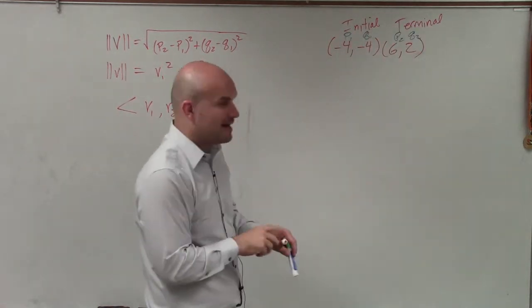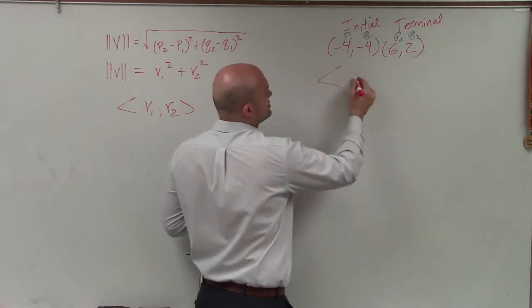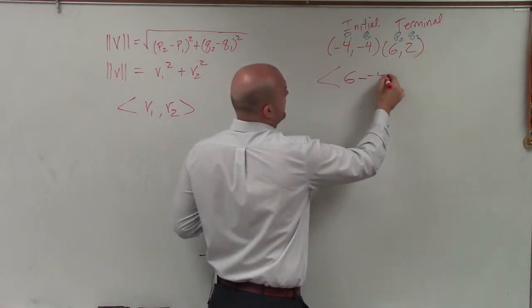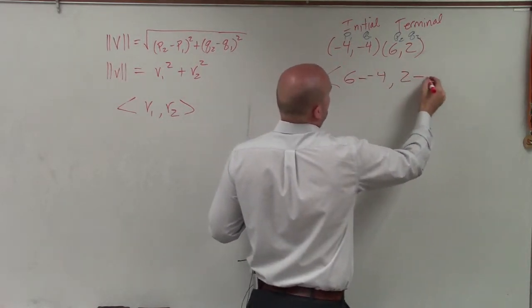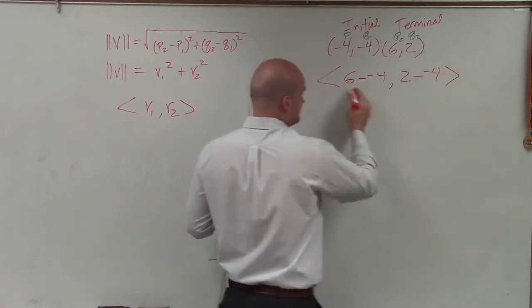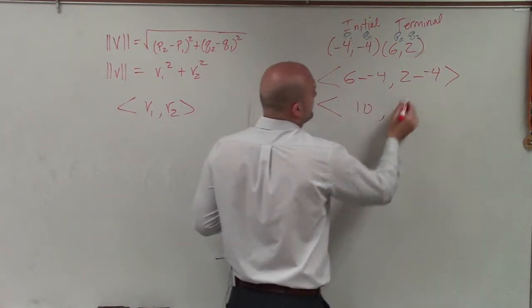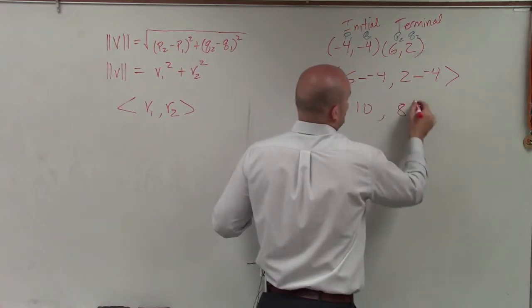So now, to determine my component form, all I simply am doing is just going to do 6 minus negative 4 comma 2 minus negative 4. Well, 6 minus negative 4 is going to be 10 comma 2 minus negative 4 is going to be 8.